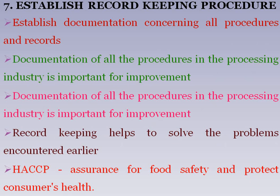The seventh principle is to establish a record-keeping procedure. All documents and records for all procedures and their applications must be documented appropriately. Documentation of all procedures in the processing industry is important for improvement, and record keeping helps to solve problems encountered earlier. Hazard Analysis Critical Control Point provides assurance for food safety and protects consumer health.